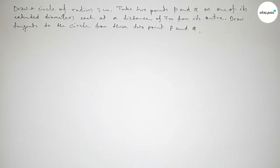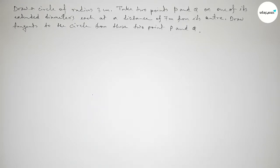Hi everyone, welcome to SI Share Classes. Today in this video we are constructing an important geometrical construction. The question is: draw a circle of radius 3 centimeters, then take two points P and Q on one end of its extended diameter, each at a distance of 7 centimeters from its center. Then we have to draw tangents to the circle from these two points P and Q.